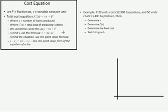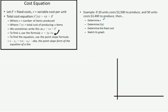We write our equation as: cost equals variable cost per unit times the number of units plus the fixed cost. To go through this example, we're going to find the variable cost using the change in Y values — the change in cost — over the change in the number of units. We're told that 20 units cost $2,500 to produce and 50 units cost $3,400 to produce.